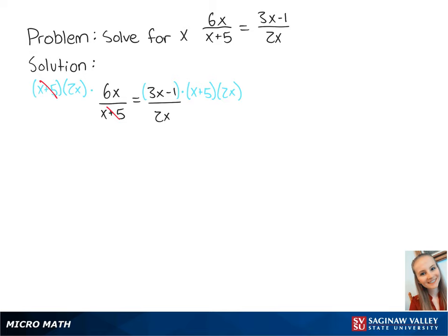The x plus 5 on the left side cancel out, and the 2x on the right side cancel out. This leaves us with 12x squared equals 3x squared plus 14x minus 5.